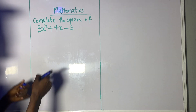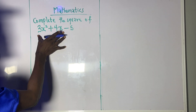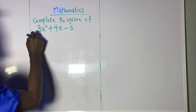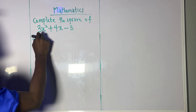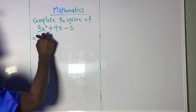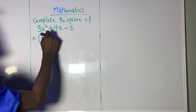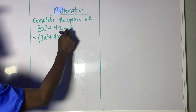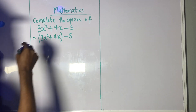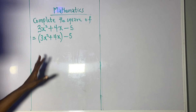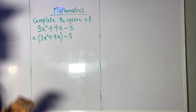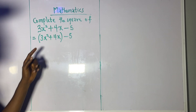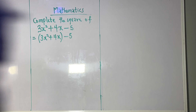The simple way to do this is to bracket the first two terms. This gives us 3x² + 4x in brackets, minus 5. So we bracket the first two terms.